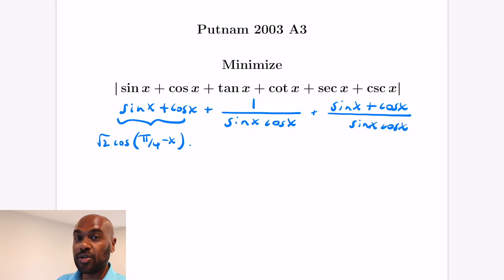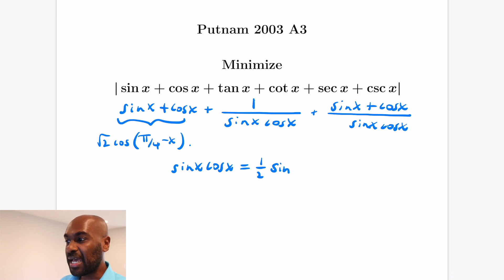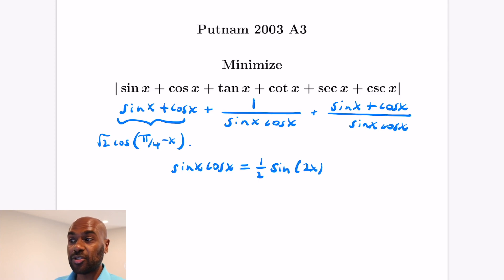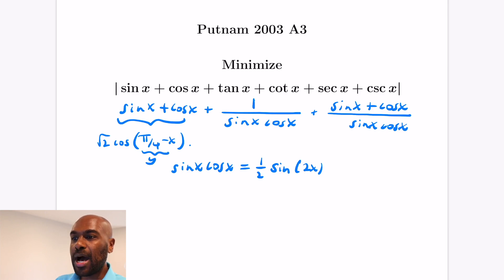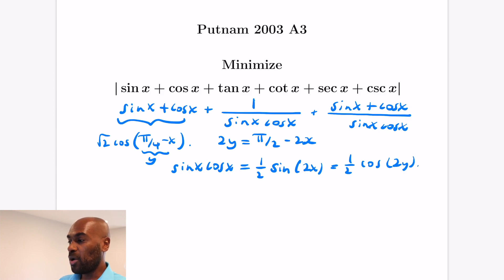Now we want to represent sin x cos x in terms of that same angle π/4 − x. We can write sin x cos x as (1/2) sin 2x using the double angle formula. Letting y = π/4 − x, we have 2y = π/2 − 2x, so sin 2x = cos 2y. Therefore sin x cos x = (1/2) cos 2y.